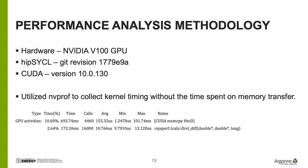For our performance analysis, we run on NVIDIA V100 GPUs tied to Intel Xeons. We use HIP-SYCL git revision 1779E9A and CUDA version 10.0.130. We utilize NVProf to collect kernel timings without including time spent on memory transfer. Shown below is a stripped-down example of NVProf output, which gives us various GPU activities such as memcopy from host to device and kernel submissions like the first_diff kernel from the Raja Performance Suite. We utilize the average time presented for kernel execution, and it is also useful to see the min and max bounding the range of times observed.